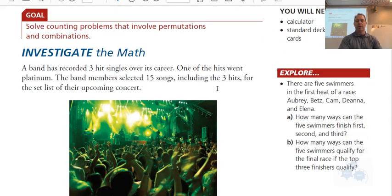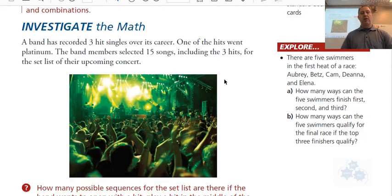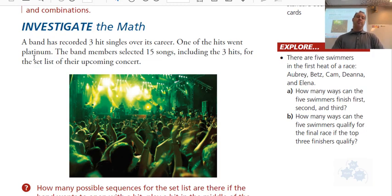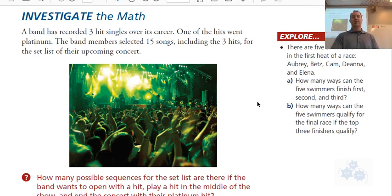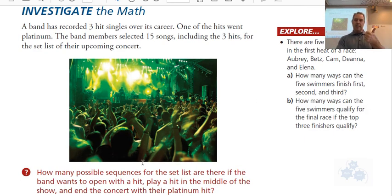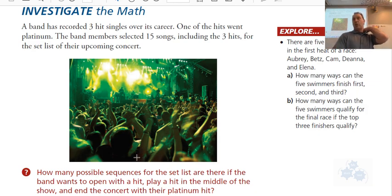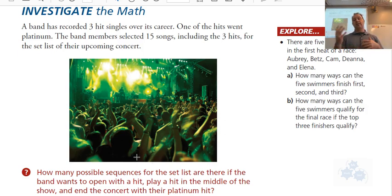So the first thing we'll take a look at is this Investigate the Math problem. A band has recorded three hit singles over its career. One of the hits went platinum. The band members selected 15 songs, including the three hits, for the set list for their upcoming concert. The question is: how many possible sequences for the set list are there if the band wants to open with a hit, play a hit in the middle, and then end the concert with their one platinum hit? You can see right away that we have some restrictions — there's something they want to open with, something in the middle, and something to end with, and then all the other songs can be in really any order.